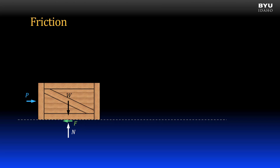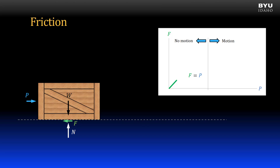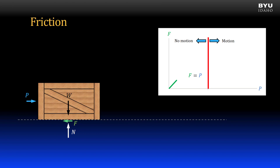If I apply a sufficiently large force, I can get the crate to slide across the ground. Let's visualize the relationship between the friction force F and the applied force P with a graph. From this graph, we can see that there is a certain applied force that will change the condition of the crate from one of no motion to motion.